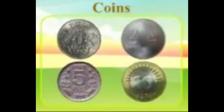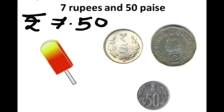Next, we use coins like 1 rupee coin, 2 rupees, 5 rupees, and 10 rupees coin. We want to buy this ice cream — its price is 7 rupees and 50 paise, so we write it as rupees 7.50. We give the shopkeeper a 5 rupees coin and a 2 rupees coin to make 7 rupees, and then a 50 paisa coin.